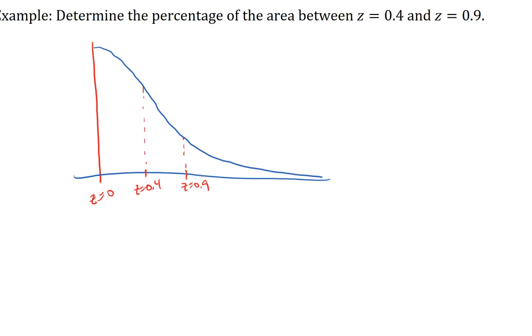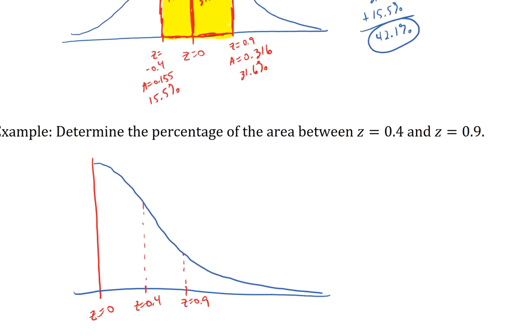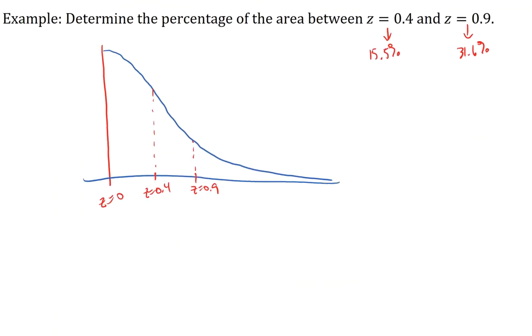So we already know from our previous example that the a value, the area for z equals 0.4, is 15.5 percent. And for 0.9, it's 31.6 percent. In this problem, we want the area between these two z-scores. So now we're talking about this area.